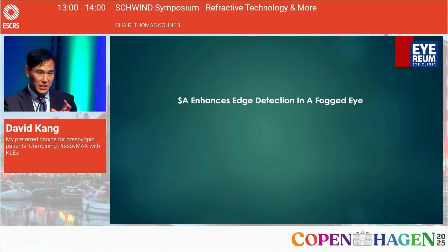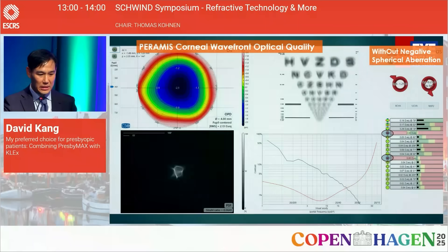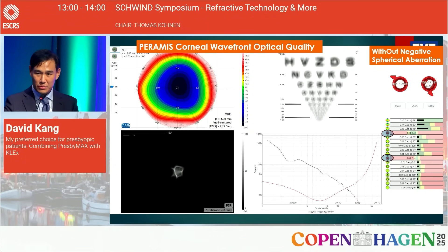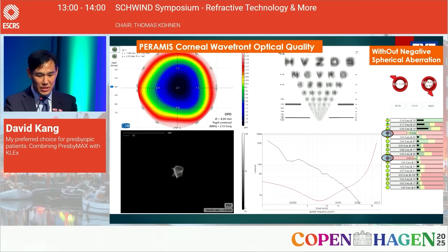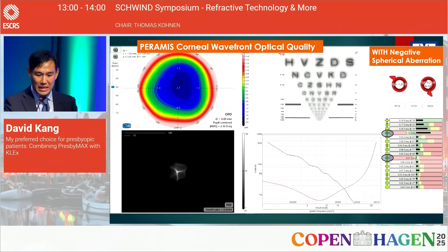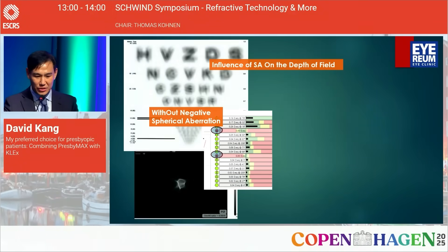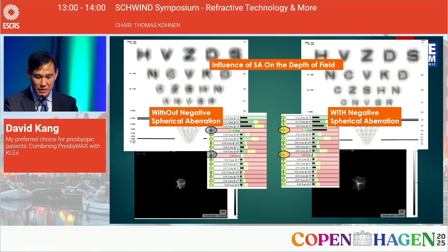Spherical aberration enhances edge detection in a fogged eye. Using the Prometra aberrometer from CSO, which can simulate images at certain defocus levels, we can demonstrate this. An Optika image of corneal wavefront optical quality without negative spherical aberration in a minus 1.25 fogged eye shows limited clarity; adding spherical aberration markedly enhances edge detection. Viewed side by side, the influence of spherical aberration on depth of field is quite obvious, though it is also pupil dependent.